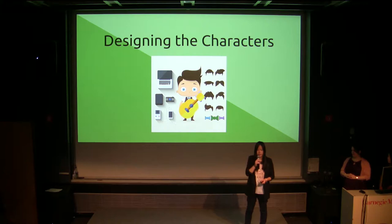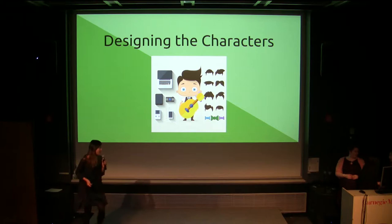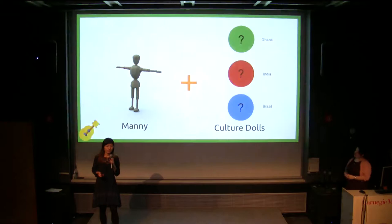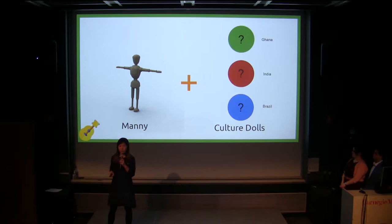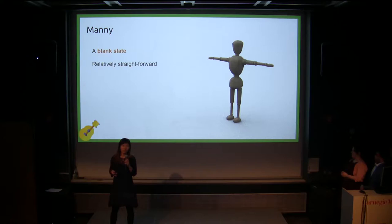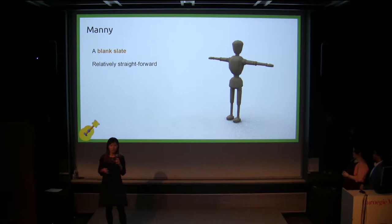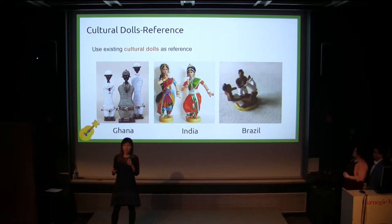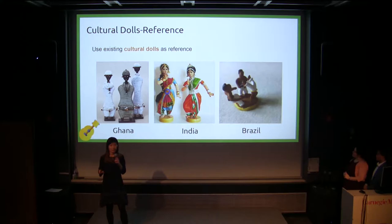Next, Flora will talk about the character design. Hi everyone, I'm Flora. I'm the character artist of the team. For the characters, there are four of them in our animation: Manny as our main character and three culture dolls. Starting off with Manny — he's a blank slate, a new mannequin just fresh out of the box, and he's looking for his own identity. So the design of him is pretty straightforward and simplistic, after all he is just a generic mannequin. In comparison, we want the culture dolls to be more visually interesting, so we did a lot of research on the cultures, on the dolls that actually exist, as well as the dances that they're going to put into the animation.